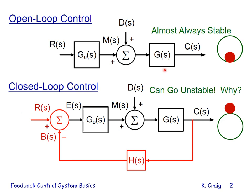Both systems have the plant or process G, which represents the system we wish to have behave in a certain way. The output variable of that plant or process, the control variable, we identify by the variable C, shown in both diagrams. There are two possible inputs to our plant or process. The first is the manipulated input M, which we have control over. The other is the disturbance input D, which we have no control over, and we see both in both diagrams.